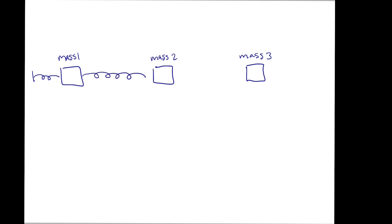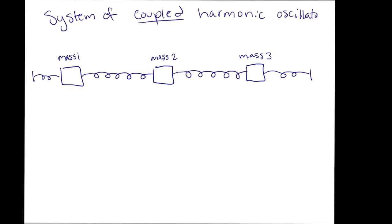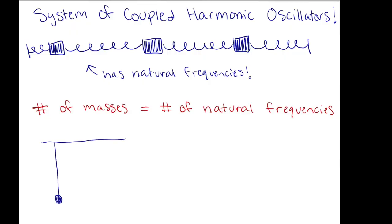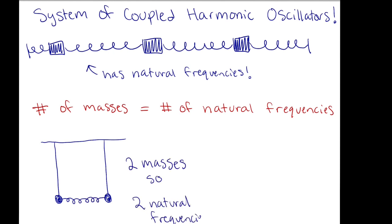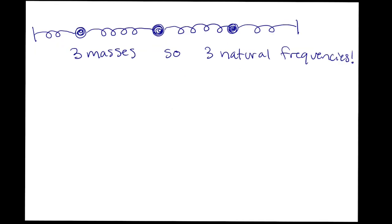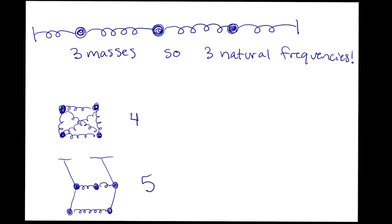Here's where it gets even cooler. You can connect oscillators in a system to get what's called a system of coupled harmonic oscillators. Just like normal oscillators, these systems will have some natural frequencies in which all of the oscillators oscillate in sync. The more objects you add to a system, the more natural frequencies it will have. For instance, if you connect two pendulums with a spring, that system will have two natural frequencies. Four masses: four natural frequencies. Five masses: five natural frequencies, and so on.